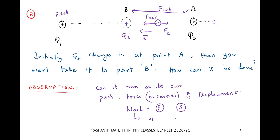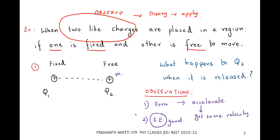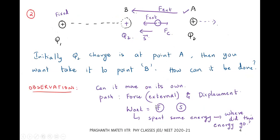We have done some work, meaning we have spent energy. So two questions arise: in the first example, the charge gained kinetic energy — where did that energy come from? And in the second example, we spent energy pushing the charge — where did that energy go? Energy is going somewhere, and we can get it back, meaning energy is being stored.